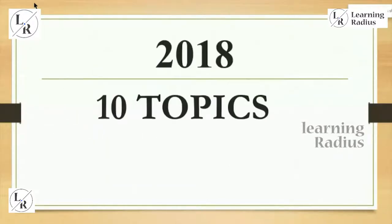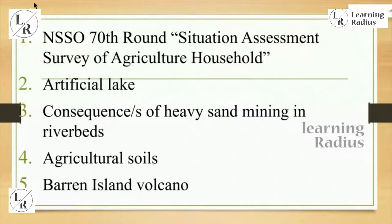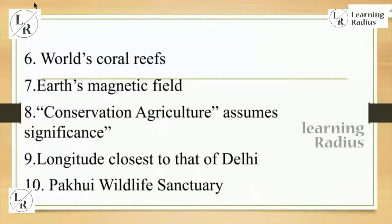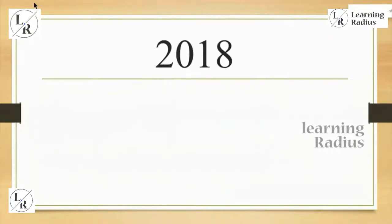When it comes to 2018, there were topics including: NSSO 70th round situation assessment survey of agricultural households, artificial lake consequences of heavy sand mining in riverbeds, agriculture soil, Barren Island volcano, world coral reefs, Earth's magnetic field, conservation agriculture, assumed significance longitude closest to that of Delhi, and factory wildlife.